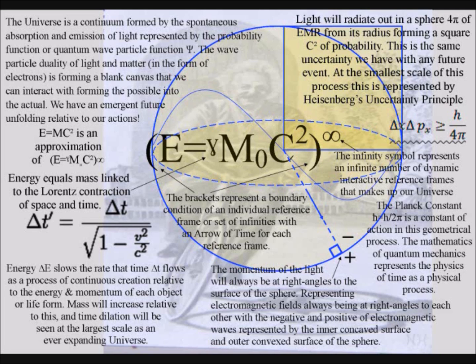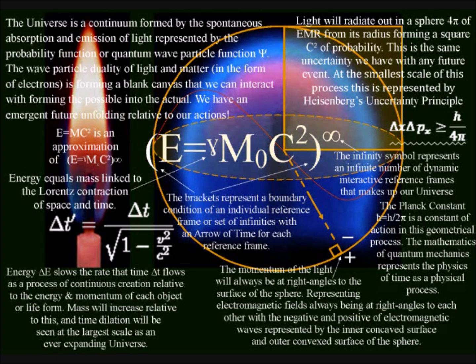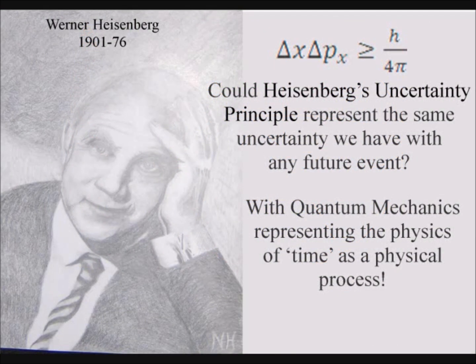Light will radiate out in a sphere of electromagnetic radiation from its radius, forming a square of probability. From within the reference frame of the candle flame, this represents an uncertain future unfolding. At the smallest scale of this process, this uncertainty is represented mathematically by Heisenberg's uncertainty principle.